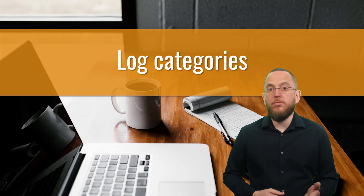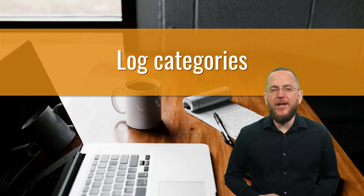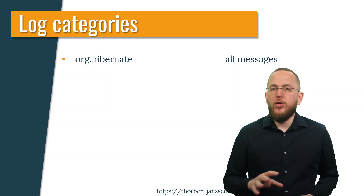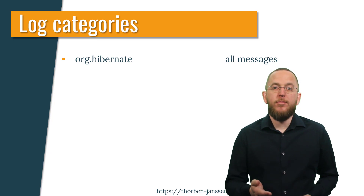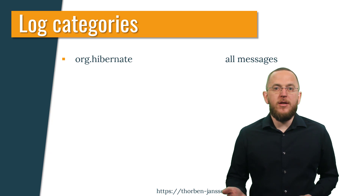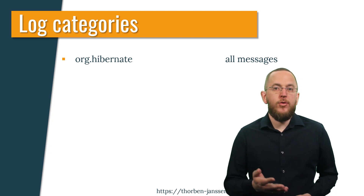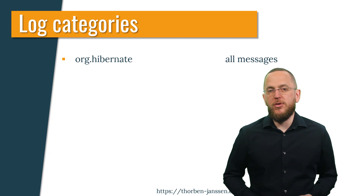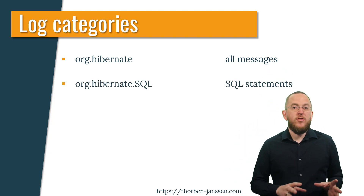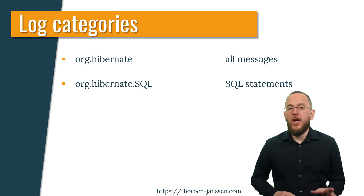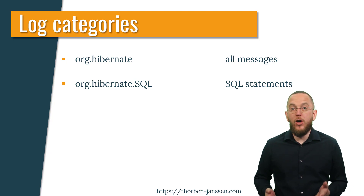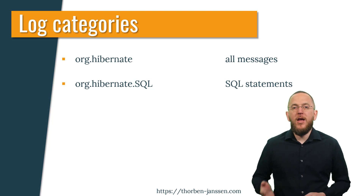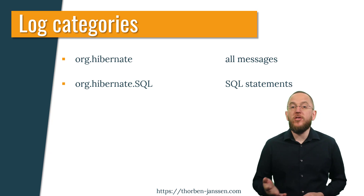The following slides show the most important log categories used by Hibernate. The category org.hibernate contains all messages written by Hibernate. You can use this to analyze unspecific issues or find categories used by Hibernate. Setting this category to a fine log level might create a lot of log output. Hibernate writes all executed SQL statements to the org.hibernate.sql category. You can use it together with org.hibernate.type.descriptor.sql or org.hibernate.orm.jdbc.bind to get more information about the JDBC parameters and results.